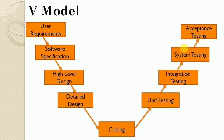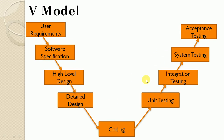After coding, the testing phase is defined in levels of testing. There are four different levels of testing: unit testing, integration testing, system testing, and user acceptance testing. This entire right arm indicates testing activities. So the V-Model left arm indicates development activities and the V-Model right arm indicates testing activities.